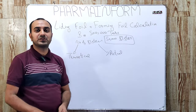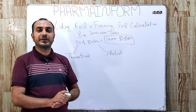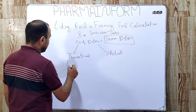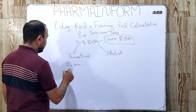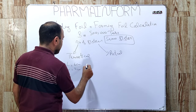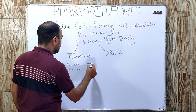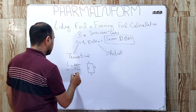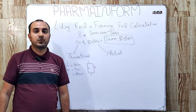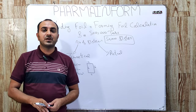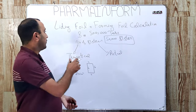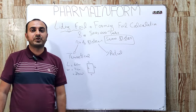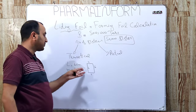First we will learn the theoretical method. In the theoretical method, we take the dimensions of the blister which are mentioned in the blister drawing. Suppose our blister length is 6 cm and width is 4 cm, so the area of one blister will be 6 × 4 = 24 cm². We will use this area of one blister for the leading foil or printed foil calculation.